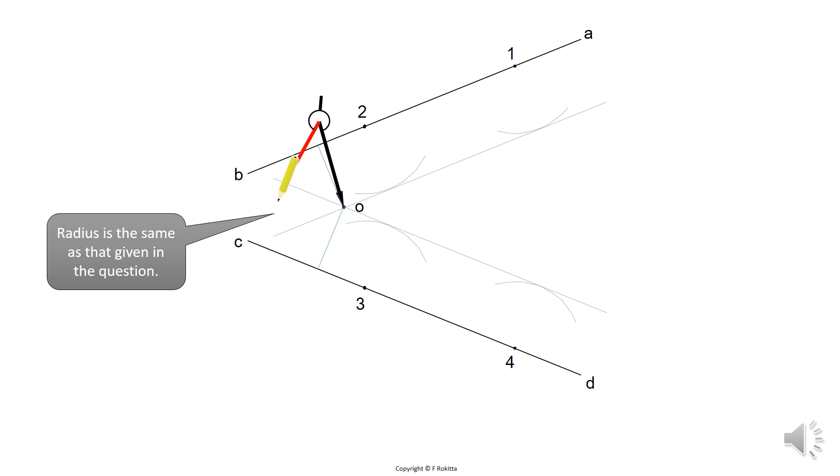Place your compass now at point O and have it stretch to the distance of the required touch arc, in this case 20 mm. Then you will draw a solid touch arc that will connect line AB and line CD. This will complete the question.